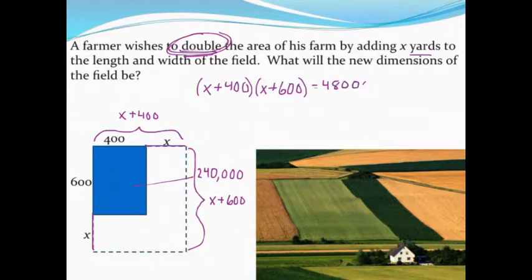If you were going to do this problem by hand, this is the point where you'd need to set this problem equal to 0, multiply x plus 400 times x plus 600, factor the problem, and then solve it. It's definitely doable, but the size of the numbers just makes it kind of annoying. So let me show you how we can use our graphing calculator to do this.